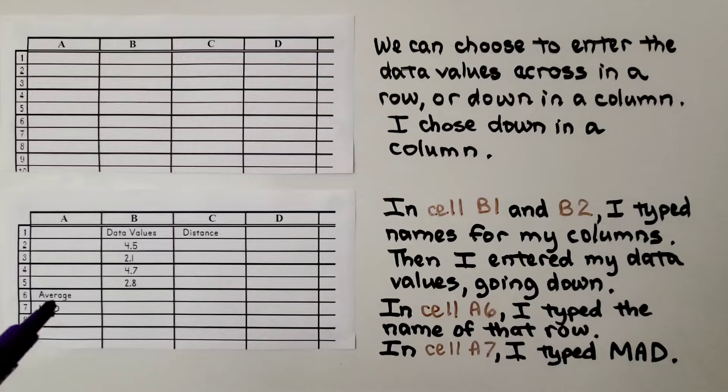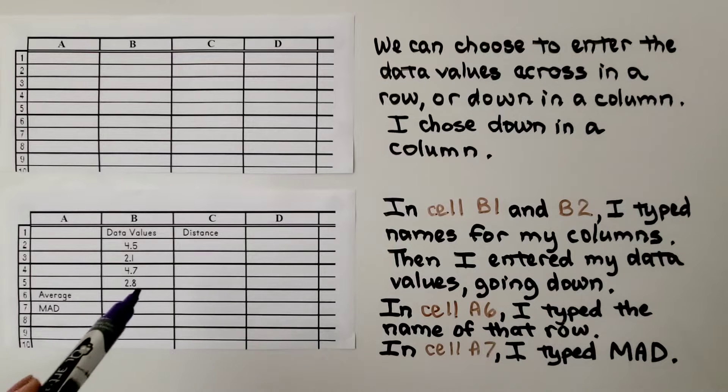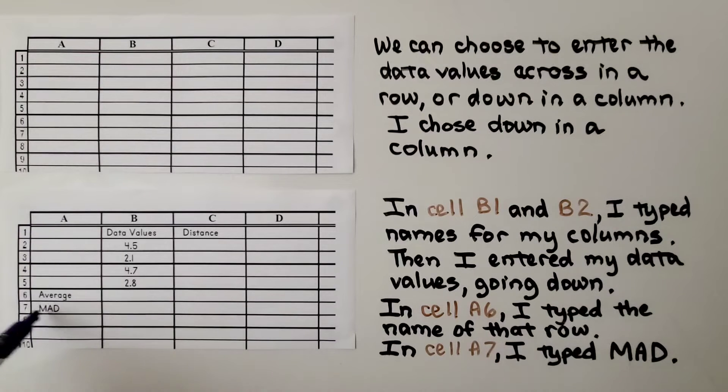In cell A6, I typed the word average because I want the average to go right here underneath my data values. And in A7, I typed the word MAD because I want to have the MAD from the distances.